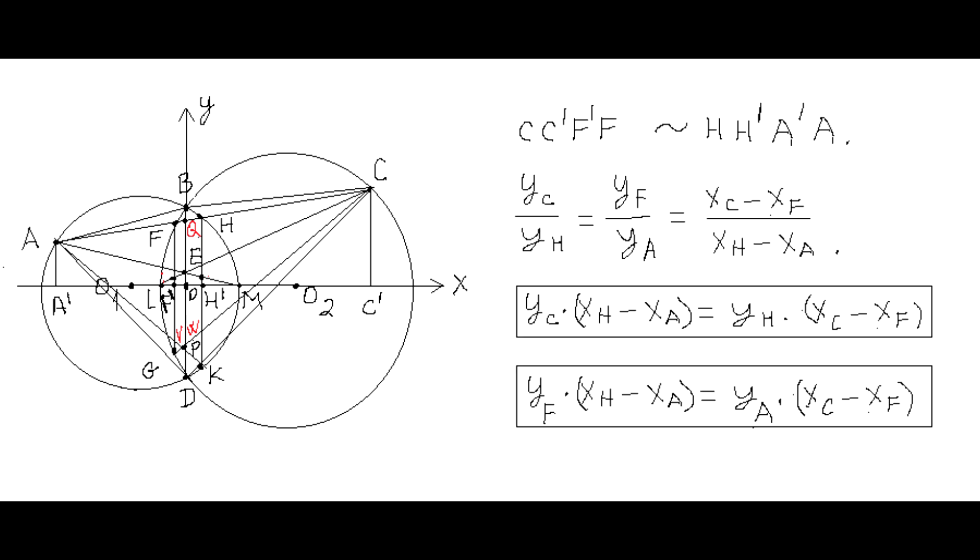The last geometric fact that we use for this proof is that trapezoids CC'F'F and HH'A'A are similar, since the corresponding sides are either parallel or the same.